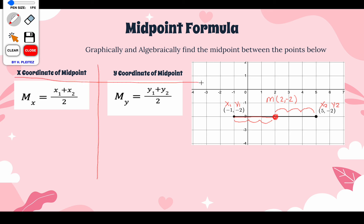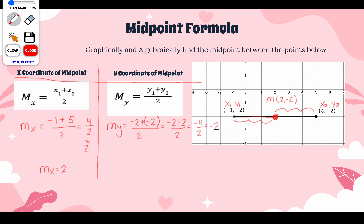Now let's verify algebraically. For the x-coordinate of our midpoint, we add up our x-values and divide by 2. Our x1 is −1, and x2 is 5, so we get (−1 + 5) / 2 = 4/2 = 2. For our y-coordinate, we take y1 which is −2, and y2 which is also −2. So we have (−2 + (−2)) / 2, which simplifies to −4/2 = −2. So our midpoint is (2, −2) — the same as graphically.